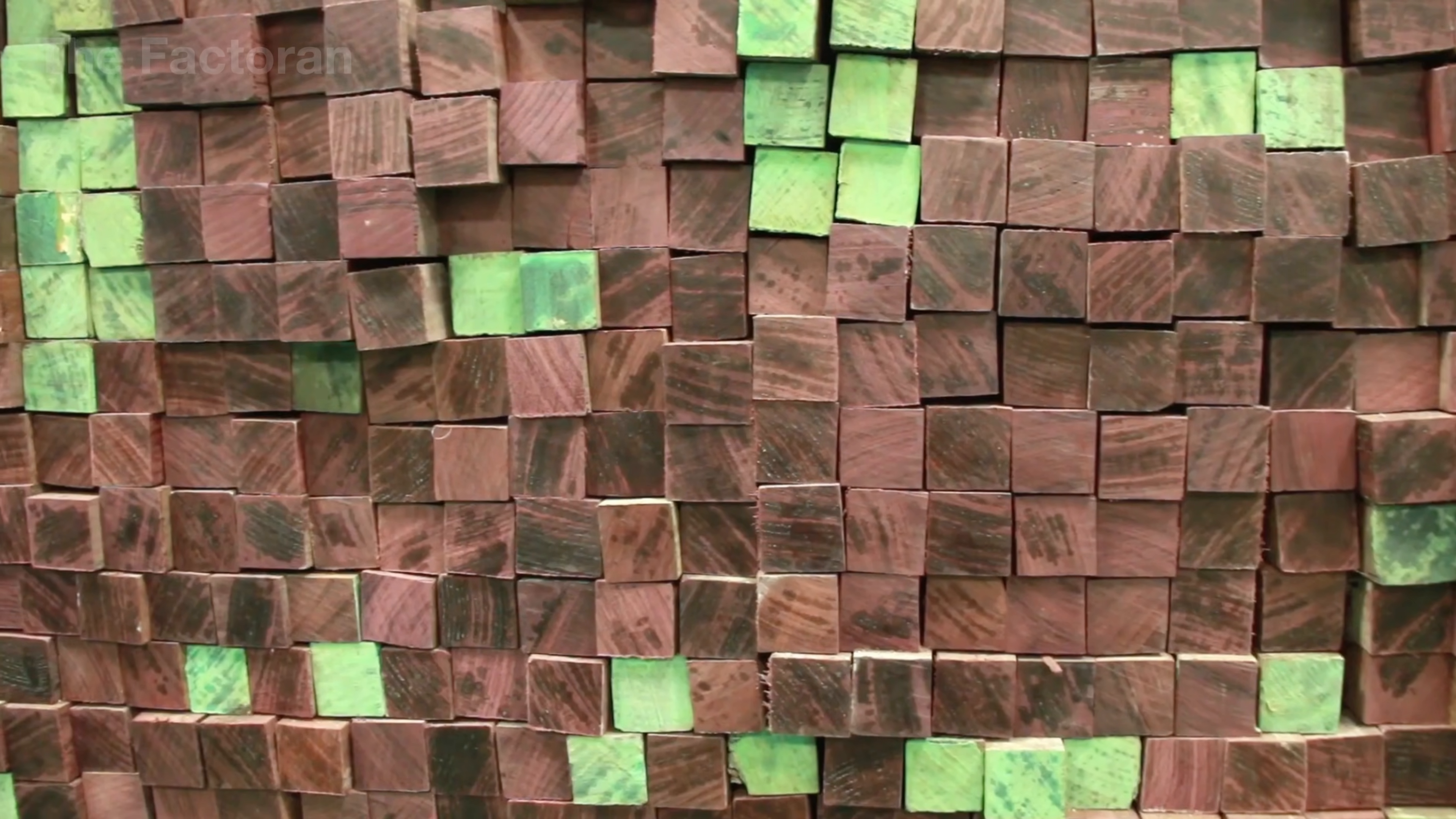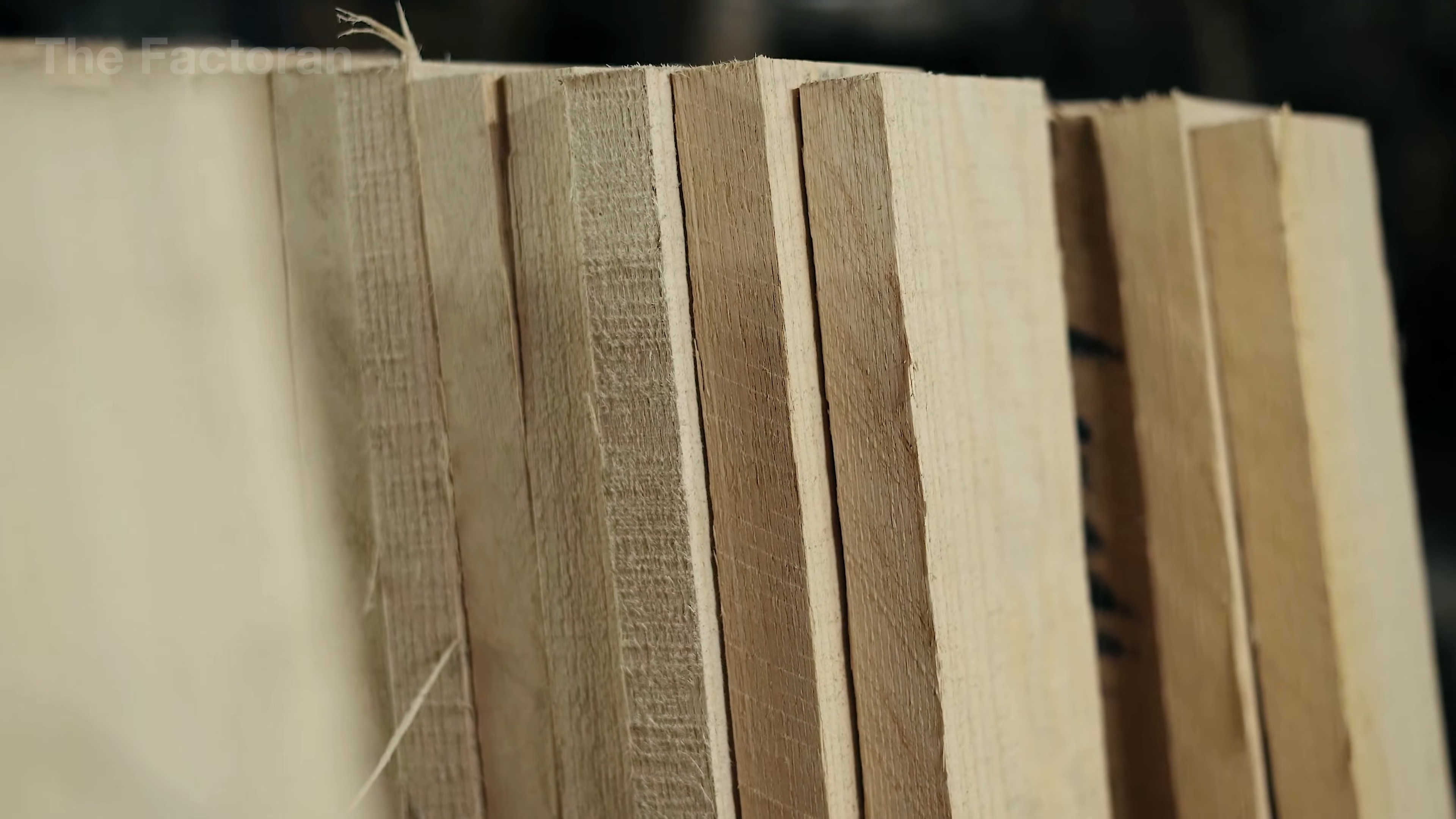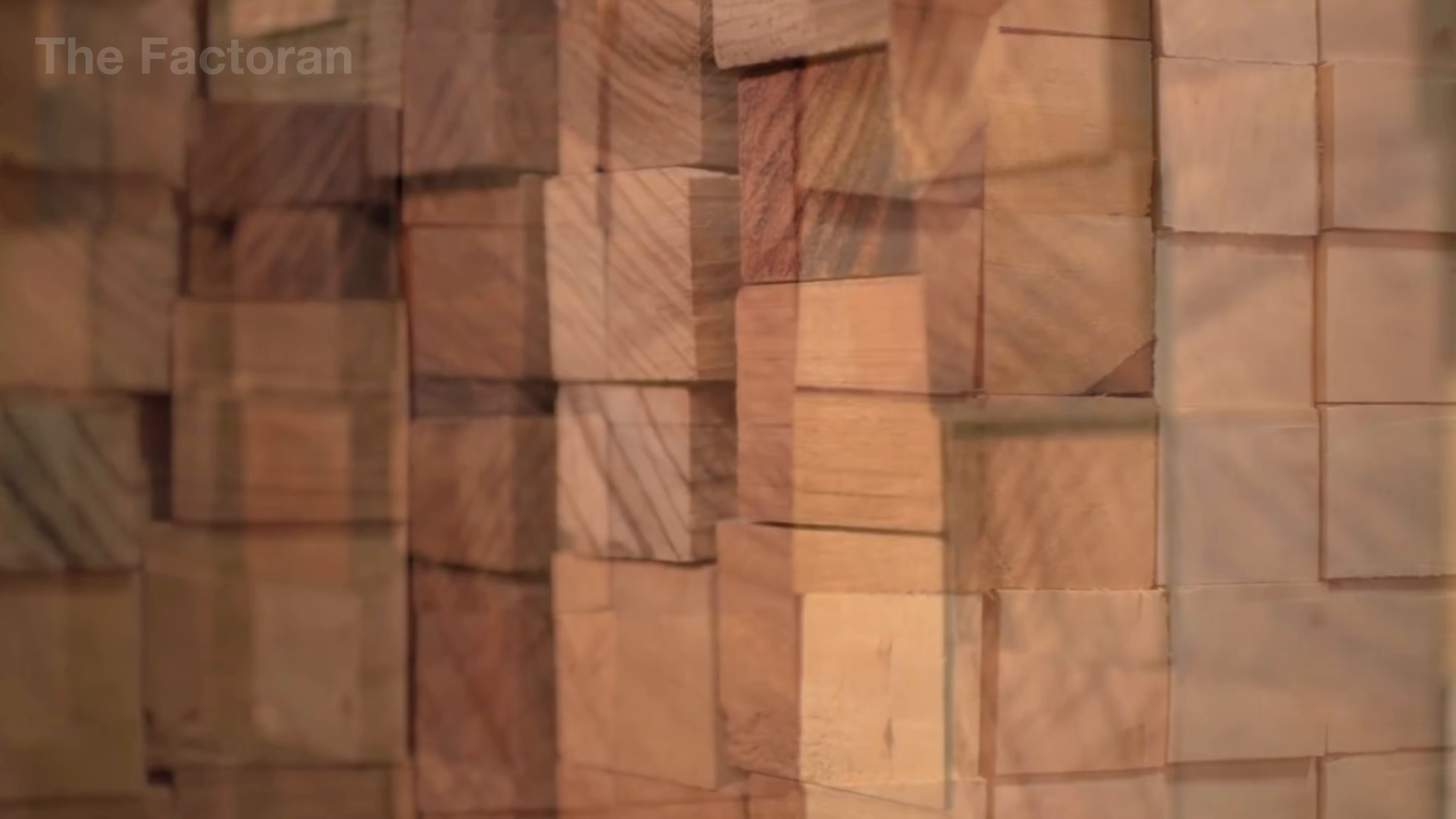The most critical criterion in selecting the wood is not its color or decorative grain, but the straightness and consistency of its fibers. If the grain is too wavy or uneven, the cue will be highly prone to warping and deformation over time.